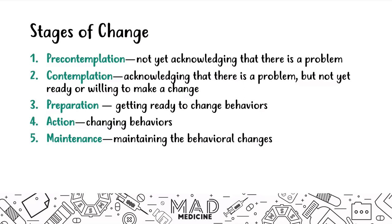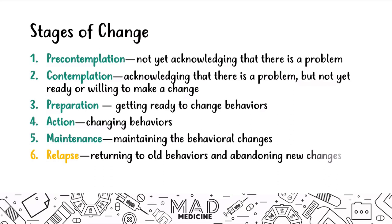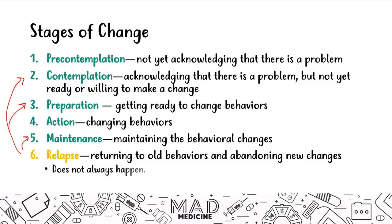The sixth stage is the saddest one — relapse. A lot of times, patients end up falling off the wagon and going back to the substances they were addicted to. They may land somewhere on the spectrum and work their way back to the maintenance stage. It doesn't always happen, but it often does.